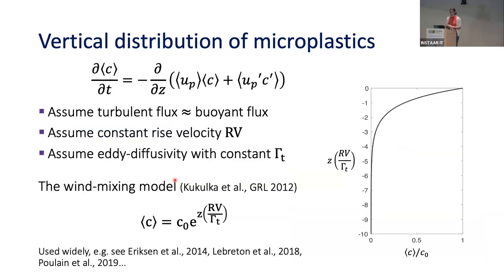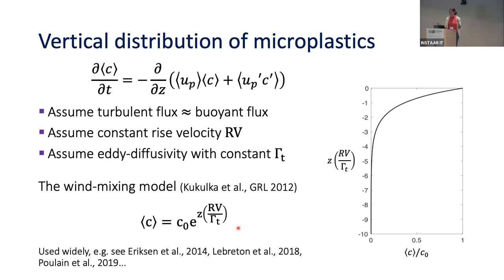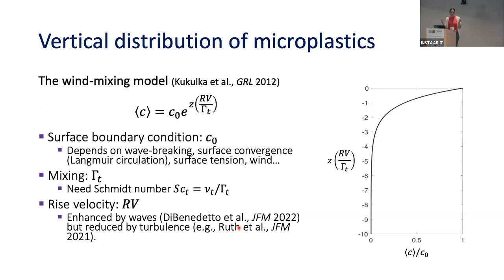We start by taking a really idealized look, assuming we're in equilibrium where mixing from turbulence is balanced by the rate at which particles rise due to buoyancy. We assume that particles rise with some constant rise velocity and that there's some constant mixing we can parameterize with a diffusivity. If we do that, we get a nice result where concentration of plastic particles decays exponentially with depth, with the concentration peak at the free surface. More buoyant particles with higher rise velocity will be closer to the surface; more mixing will push them lower down.